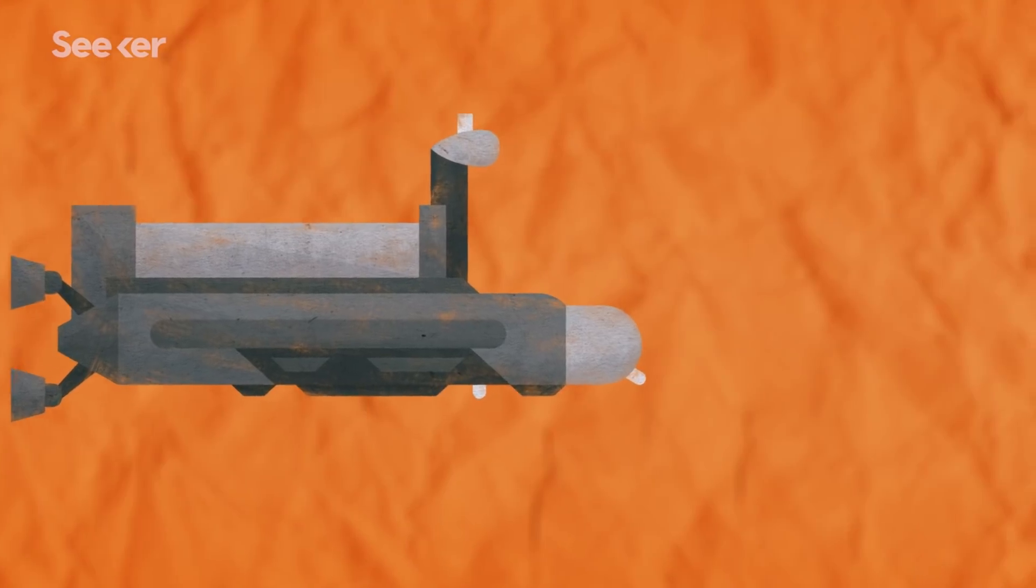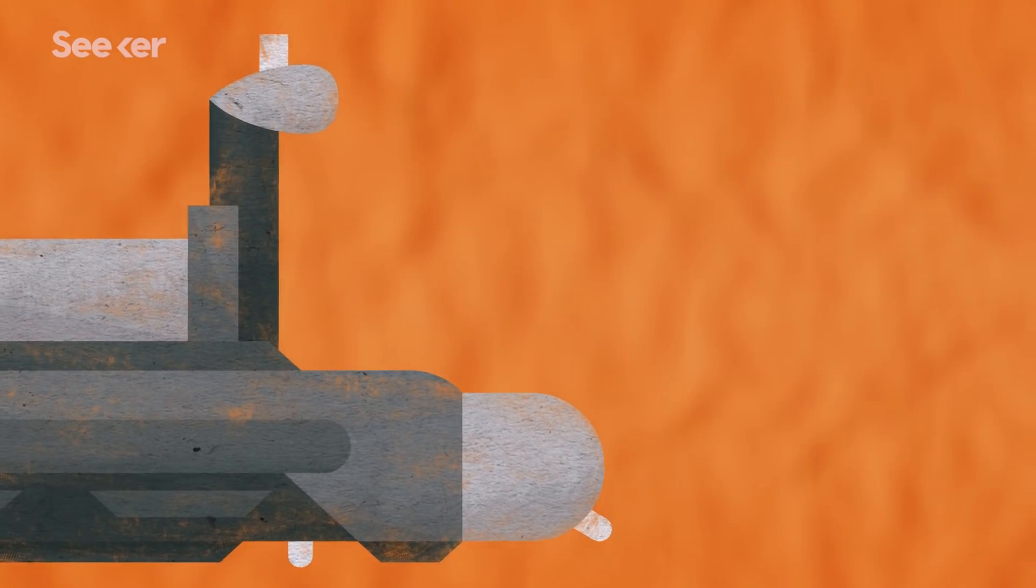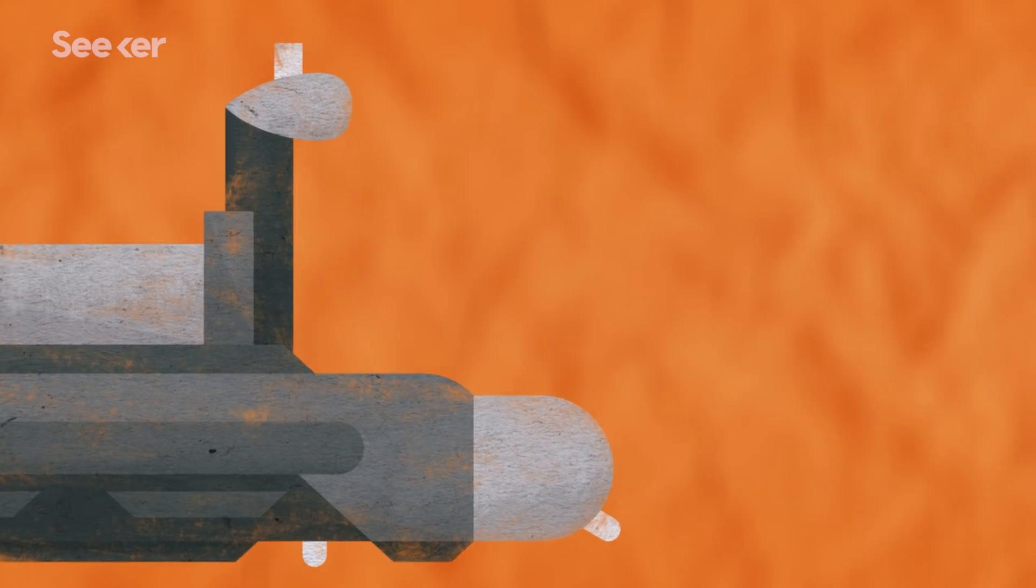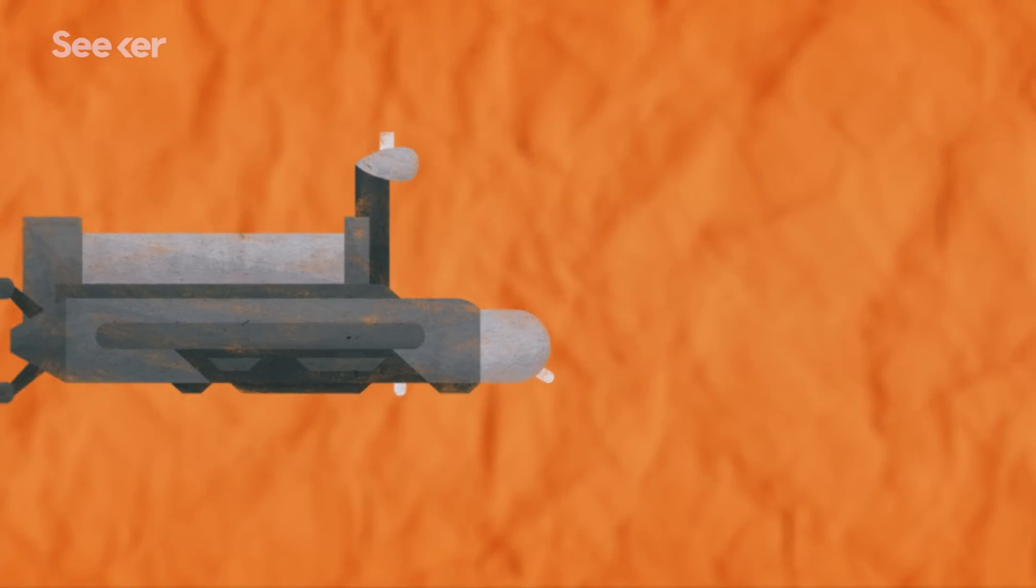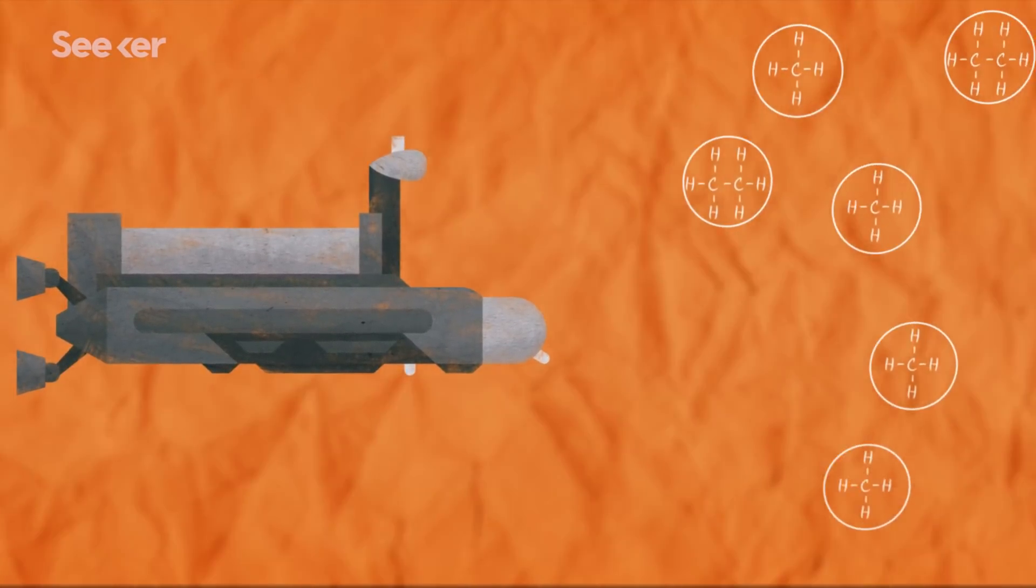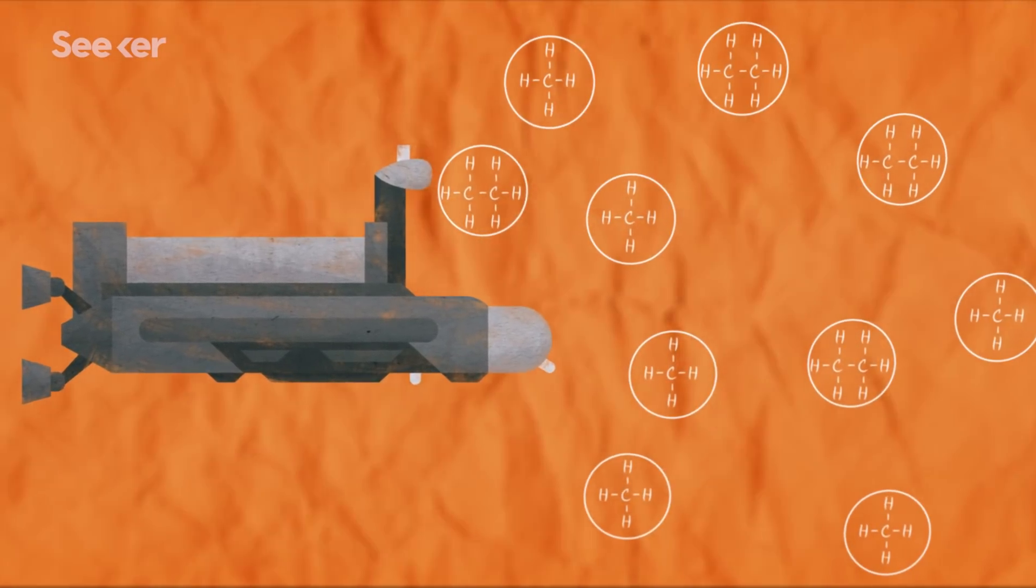But designing and constructing a submarine that can survive at minus 300 degrees Fahrenheit is a significant challenge and one that, quite frankly, might be completely impossible. And because Titan's seas have concentrations of ethane and methane, the liquid density of the oceans and lakes could change, and it could make it difficult for the sub to propel through them.